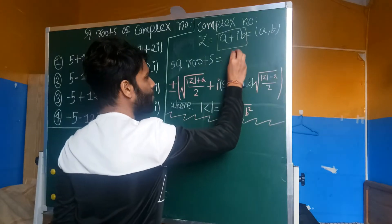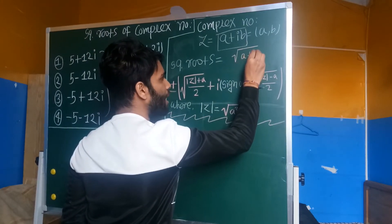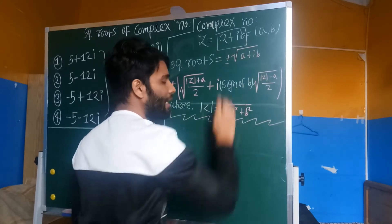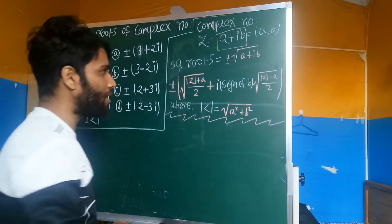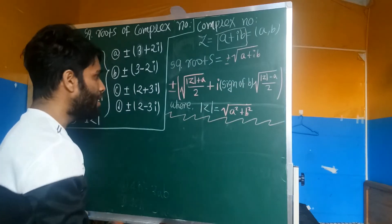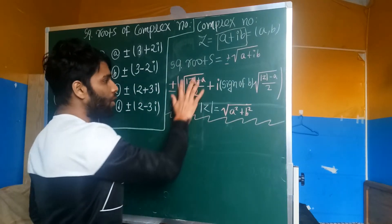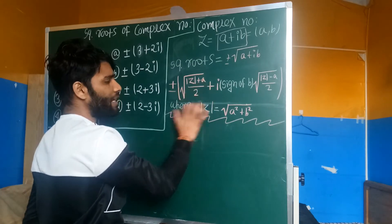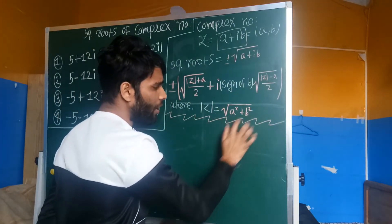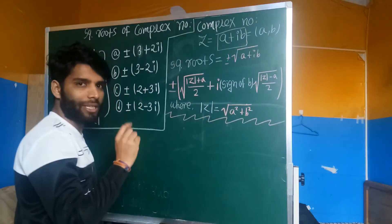So the square root of a plus ib — the value will be plus or minus: root over (modulus z plus a) divided by 2, where modulus z means root under a squared plus b squared.